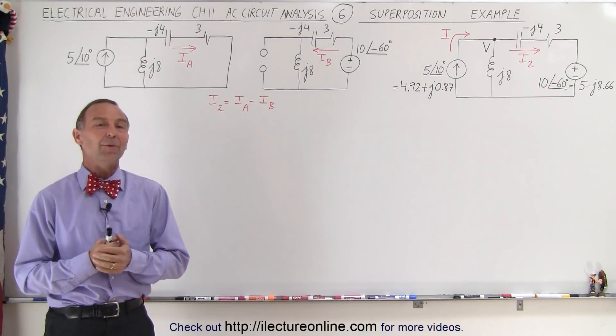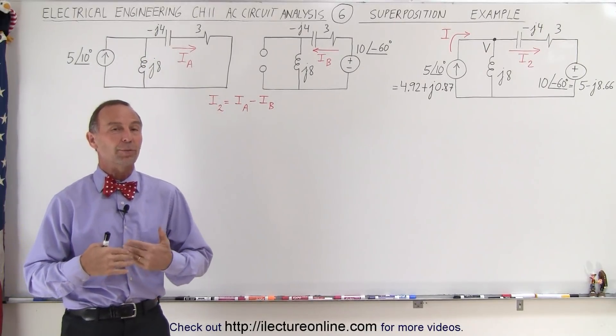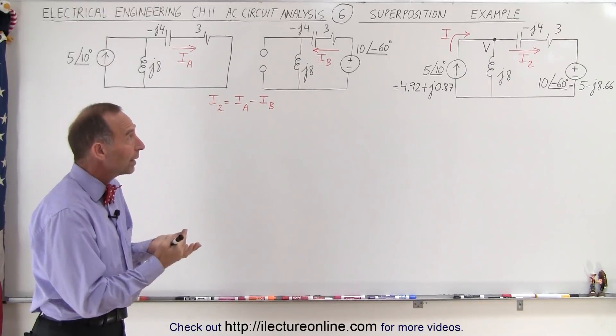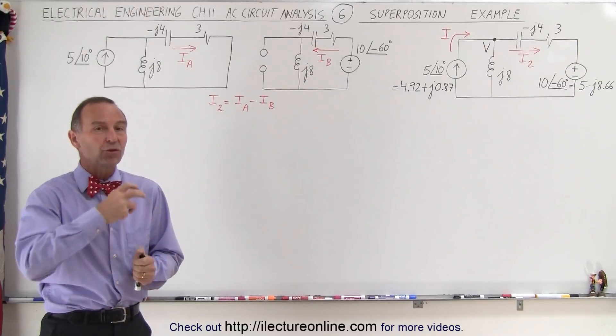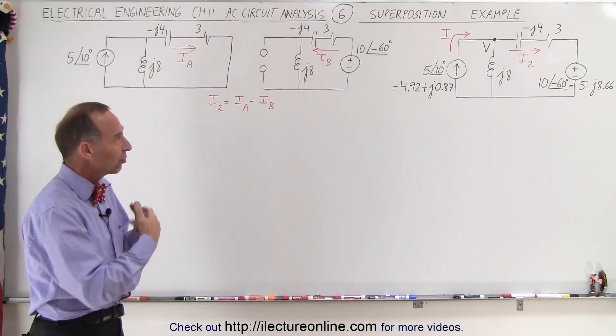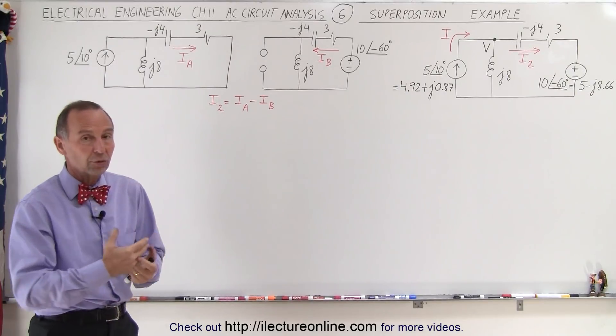Welcome to Electronline. Now we're on to method three called the superposition method. What we do there is we remove each source one at a time and then solve the circuit with that source removed.